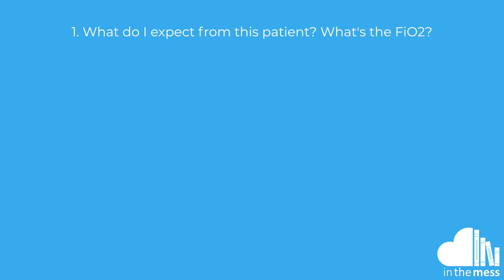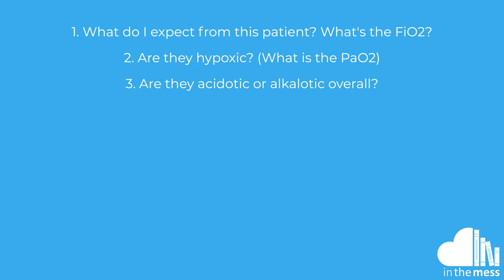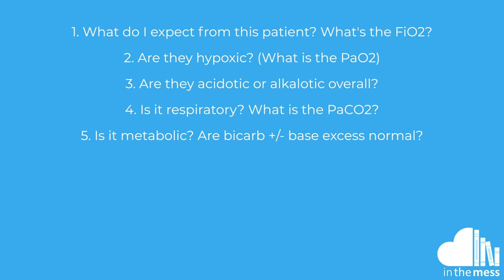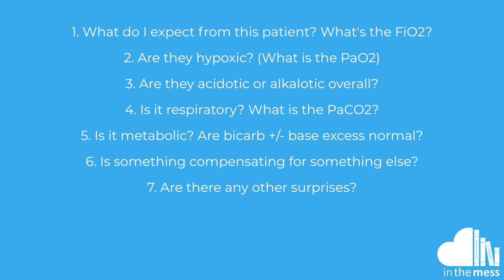To summarize: 1. What is the patient in front of you? What results are you expecting? Are they off from a respiratory or metabolic perspective clinically? Check what FiO2 they're receiving if not breathing air. 2. What is the pO2? 3. What is the pH — acidic or alkalotic? 4. What is the pCO2? 5. What is the bicarbonate or base excess? 6. Are they compensating? Are both pCO2 and bicarbonate off? Which one is compensating for which? Clinical correlation required. 7. What are the other values — is there anything else you need to check?